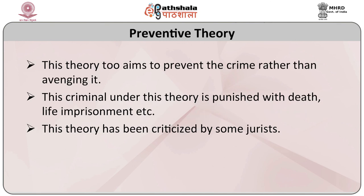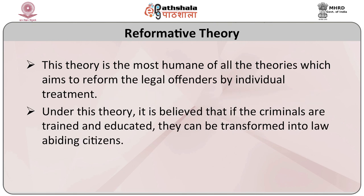Preventive Theory: this theory aims to prevent crime rather than avenge it. The idea is to keep the offender away from society. The criminal under this theory is punished with death, life imprisonment, etc. The theory has been criticized by some jurists. Reformative Theory: this is the most humane of all theories, aiming to reform legal offenders by individual treatment. The idea is that no one is born criminal and criminals are also humans. Under this theory, it is believed that if criminals are trained and educated, they can be transformed into law-abiding citizens. This theory has proved successful and is accepted by many jurists.